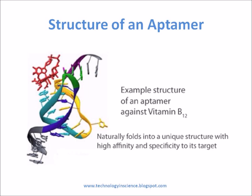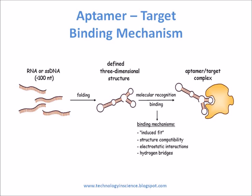Aptamer structure: DNA aptamers are 15 to 60 oligonucleotide bases long. Interaction of aptamers to the target is based on their three-dimensional folding patterns. The complex three-dimensional structure of the single-stranded oligonucleotide is due to intramolecular hybridization, which causes folding into a particular shape. Due to this complex three-dimensional shape, aptamers have high affinity and specificity towards target molecules.